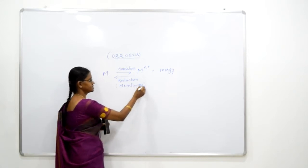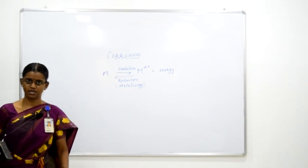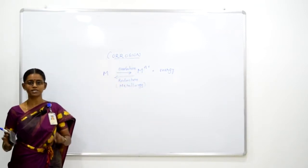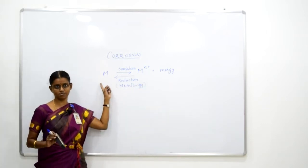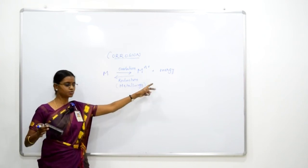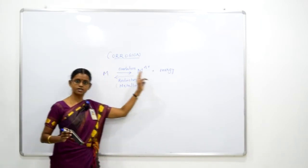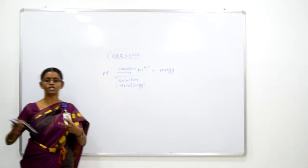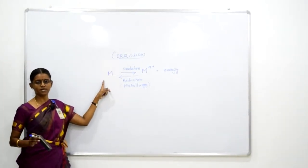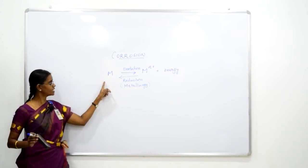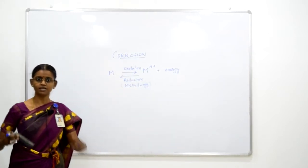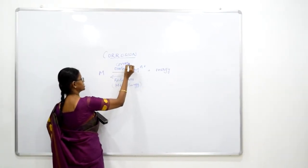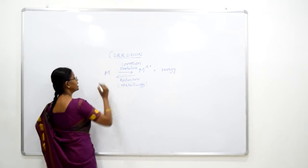On Earth, most metals exist in the form of ions; they do not exist in the form of metal, except for a few noble metals. At our temperature and pressure conditions, they exist as metal ions and not as metals. As scientists, engineers, when we want materials, we supply energy, do an extraction process — a reduction process — and we get a metal. This metal makes all our equipment, vessels, buildings, and monuments. But these metals are not stable; they try to go back to their natural state by undergoing oxidation. This process is corrosion — a natural phenomenon.